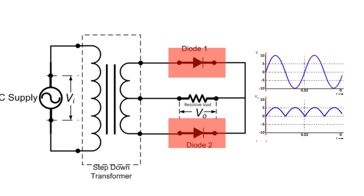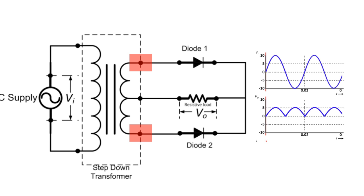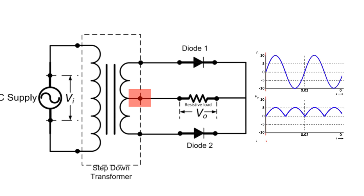These two diodes D1 and D2 are connected to the opposite ends of the transformer. The center tap is usually considered at the ground point or the zero voltage reference point. Now let's understand the working.